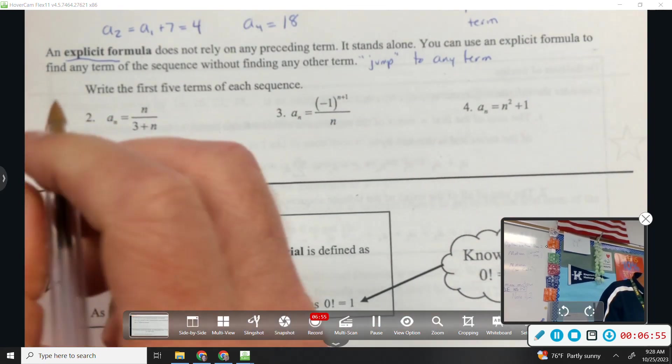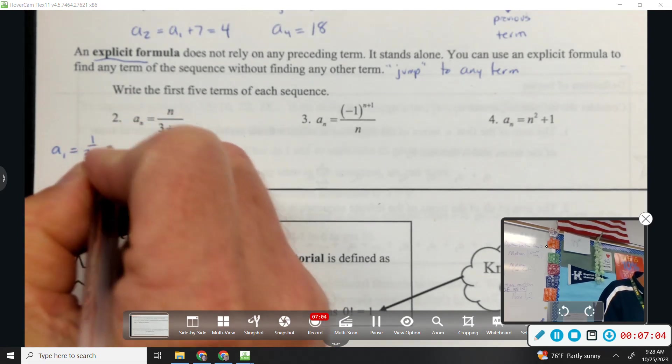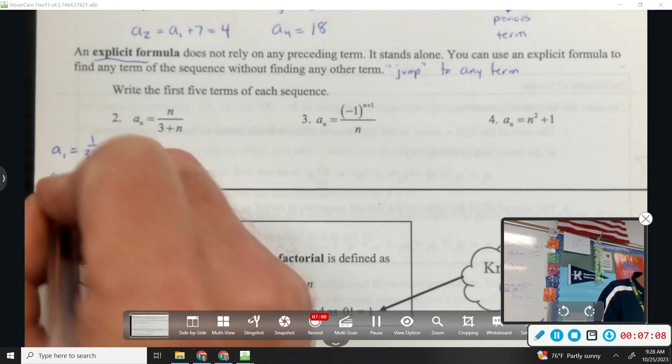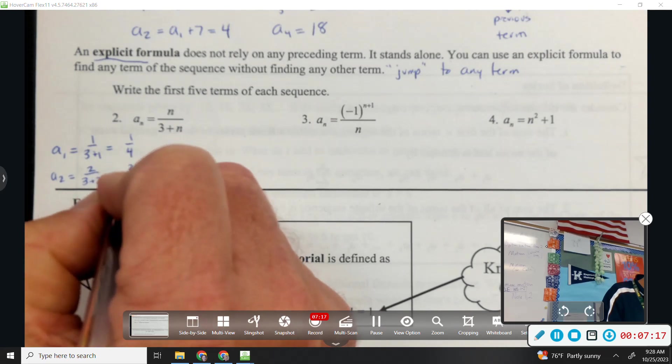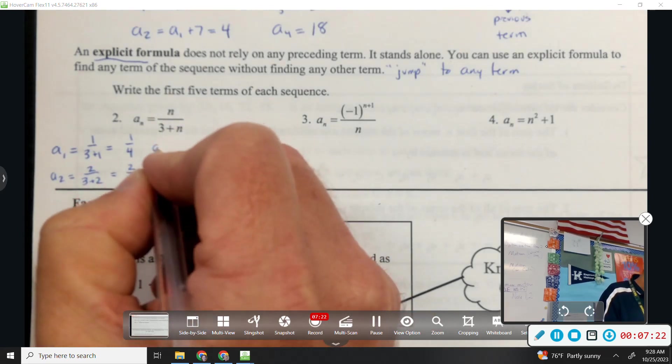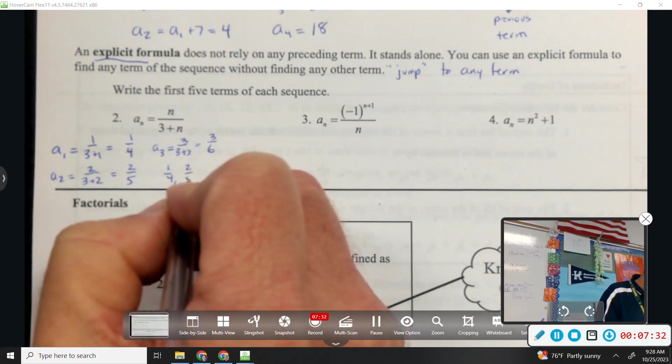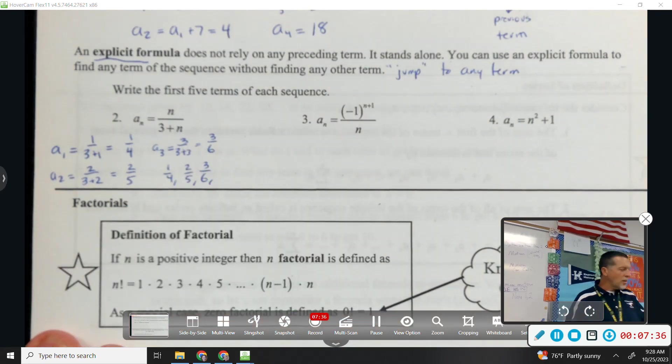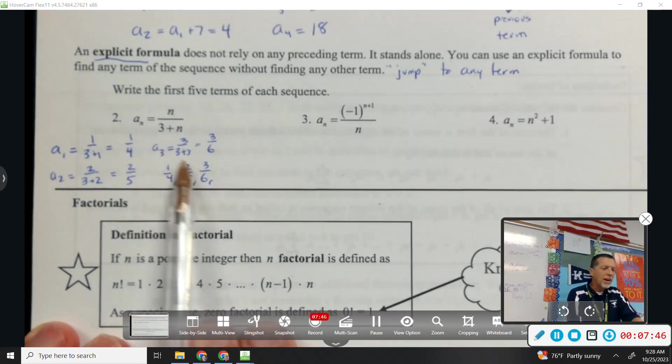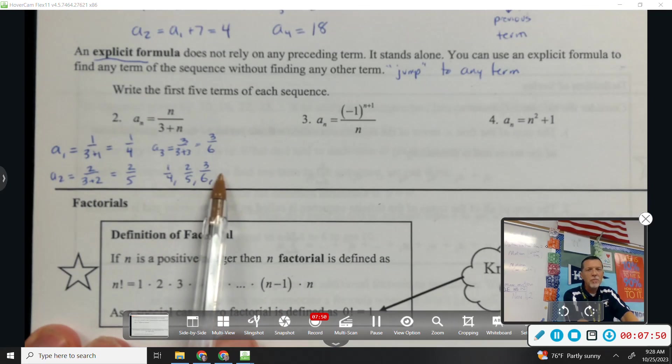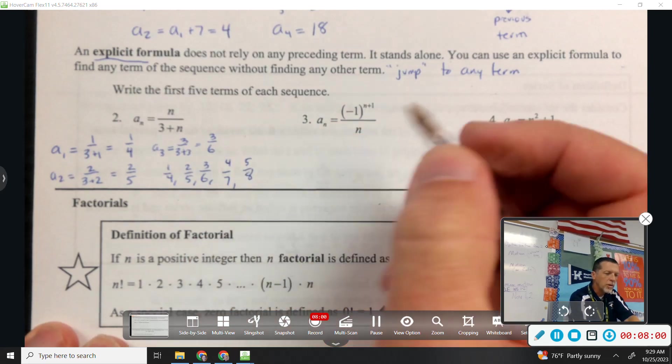The first five terms of each sequence. So a sub 1 means plug in 1. 1 over 3 plus 1, that would be 1 fourth. a sub 2 would be 2 over 3 plus 2. That would be 2 fifths. a sub 3 would be 3 over 3 plus 3. 3 sixths. And at some point, it would be 1 half, but if you want to recognize the pattern easier, don't reduce it. Like, leave it that way. Because I'm going to stop writing a sub 4 equals and a sub 5 equals. I'm just looking at the pattern now. 4 over 7. And then 5 over 8. And you can keep going, but it asks for the first five terms.